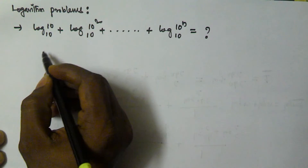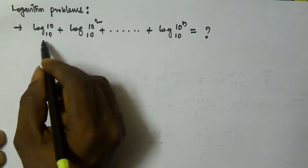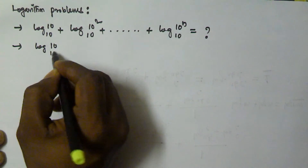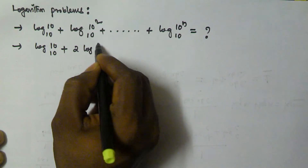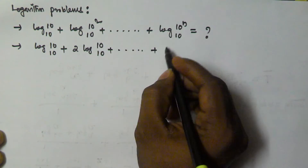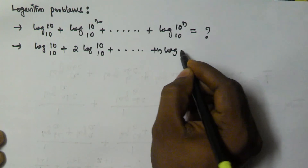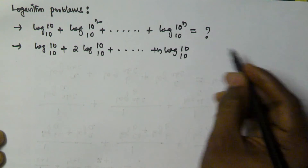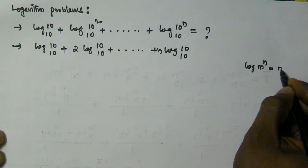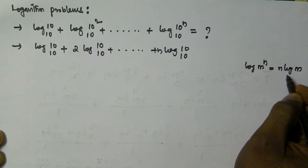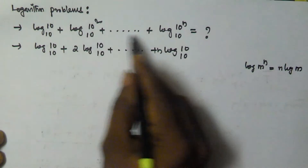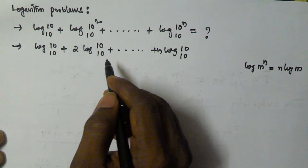This can be written as log 10 base 10 plus 2 log 10 base 10 plus so on plus n log 10 base 10. We use the formula that log m to the power of n can be written as n into log m. Using this formula, I have written this equation like this.